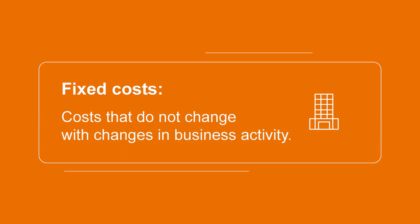Fixed costs, on the other hand, are costs that do not change with a change in the business activity. For example, if a manufacturing facility with full production capacity of 100,000 units rents for $5,000 per month, it does not matter if you produce one unit or 100,000 units — the rent payment of $5,000 is fixed. But if the company has to produce 120,000 units, they will have to rent additional space to fulfill the additional 20,000 units of production.